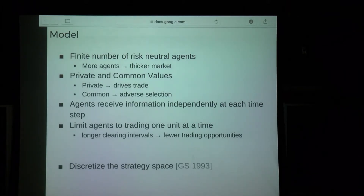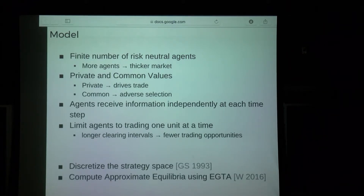The model as described is relatively complex — it's going to be hard to analyze exactly in a tractable analytic way. So instead, we discretize the strategy space according to standard agent-based interactions for financial markets, then use EGTA — a methodology for computing approximate equilibria in simulation-based games — to find approximate equilibria and analyze this over several environments to determine how different aspects of market environments affect what an optimal clearing interval is.